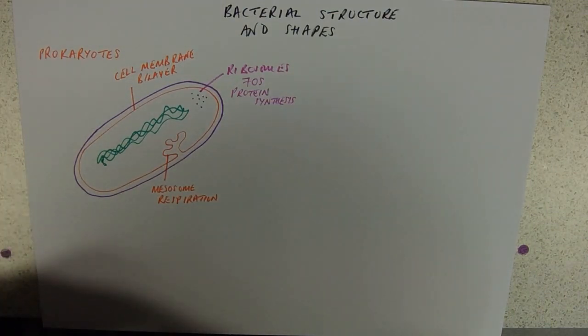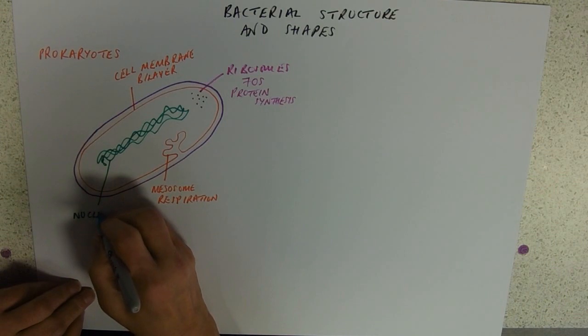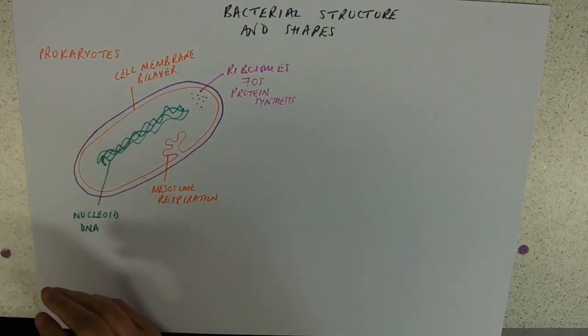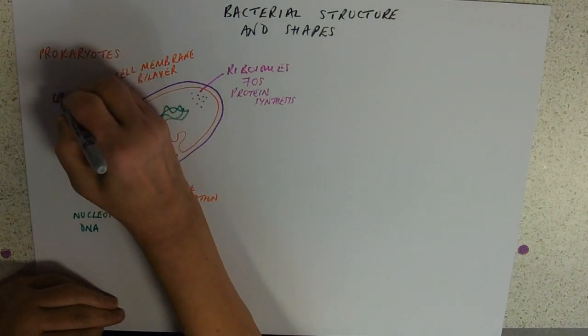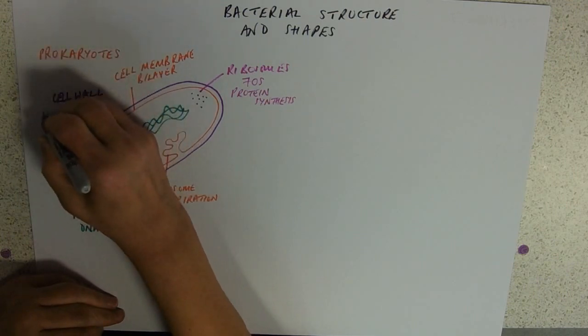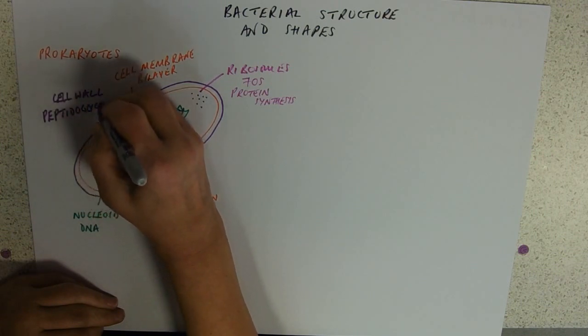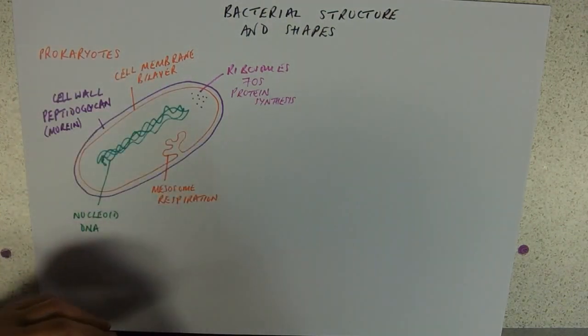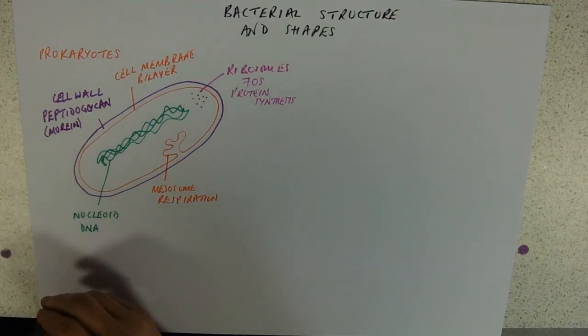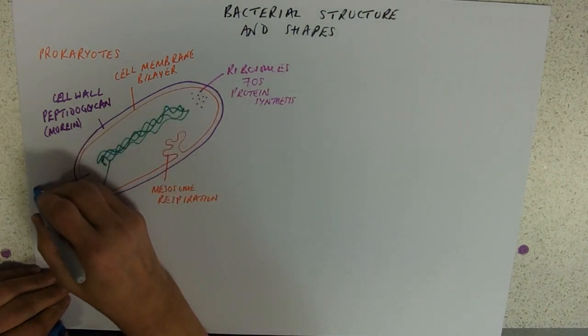And we've got our nucleoid, which just describes the region where we find the DNA that codes for the basic bacterium. And we've got the cell wall, which contains peptidoglycan. Urine. And, of course, everything inside this cell is floating about in the cytoplasm.